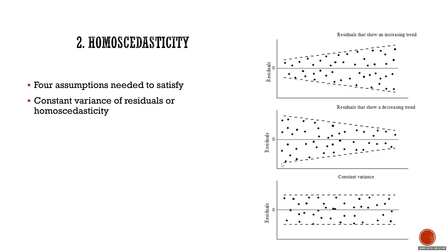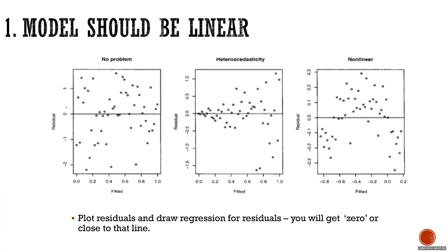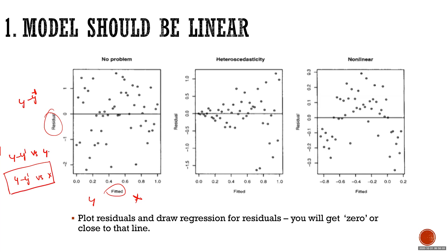Regarding the residual fitted plot: the Y-axis is Y minus Y-bar and the X-axis is the fitted value, which is essentially your X. There are some textbooks where you do the residual plots as Y minus Y-bar versus Y, and Y minus Y-bar versus X — both should give you the same assumptions. The fitted value here actually refers to Y. Both residual plot analyses are correct.